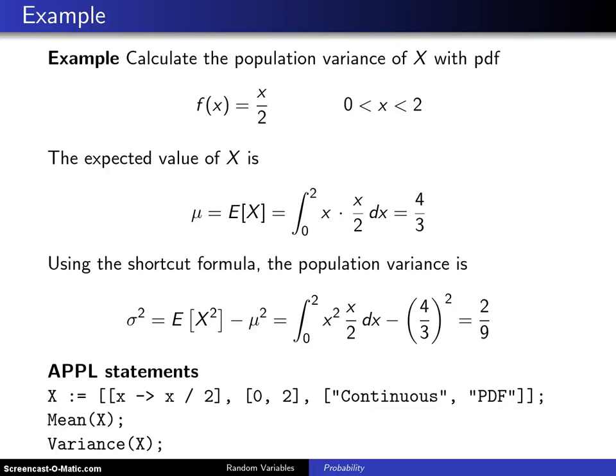Here's an example of calculating the population variance of x using the shortcut formula. Calculate the population variance of the random variable x with probability density function f of x equals x over 2 for x values between 0 and 2.